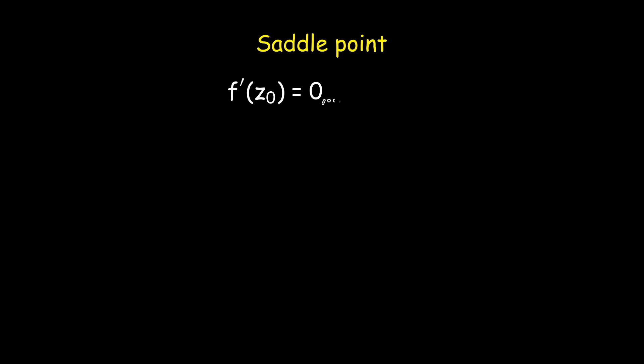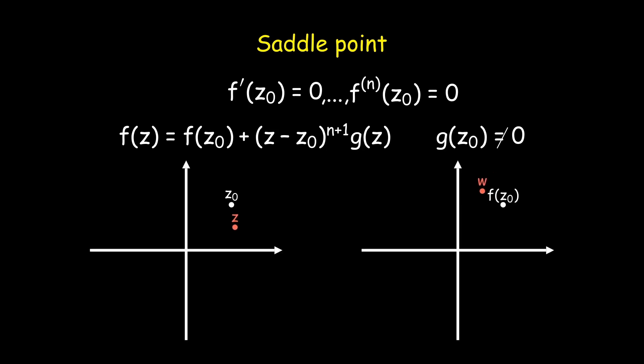Let us assume the derivatives vanish up to an order n, so that the saddle point has an order n. The local expansion of the function f then can be expressed as f(z) = f(z₀) + (z - z₀)ⁿ⁺¹ × g(z) for an analytic function g that does not vanish at z₀. If z orbits around z₀ in a small circle, the image point of w circles the function value f(z₀) exactly n + 1 times. Since the function value is not zero, this is a saddle point and not a zero point.